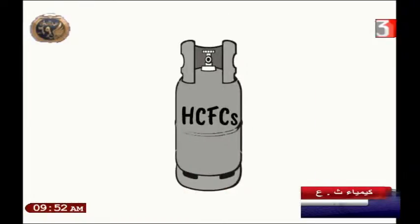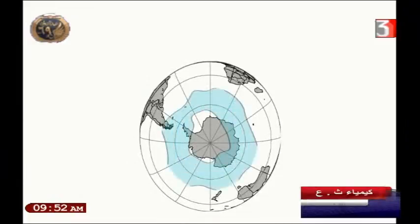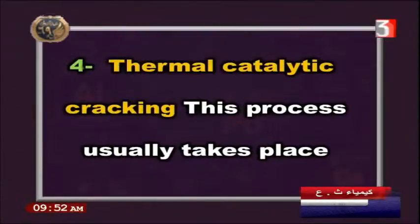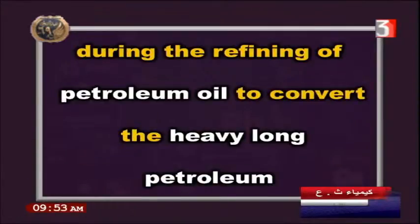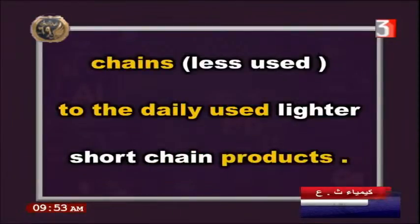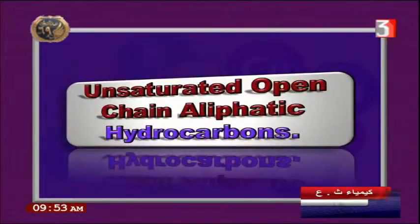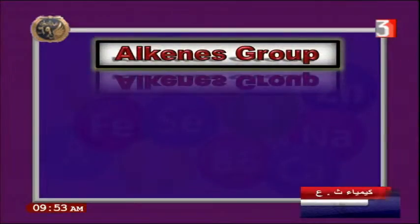Efforts are being made to replace harmful CFCs with compounds containing more fluorine and hydrogen, which are safer for the atmosphere. Another important process is thermal and catalytic cracking, which takes place during the refining of petroleum oil. This process converts heavy, long petroleum chains — which have limited uses — into lighter, shorter chains that are more useful in daily life.